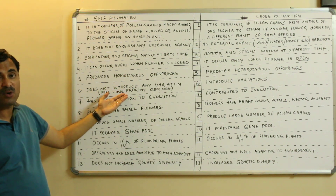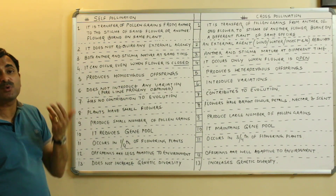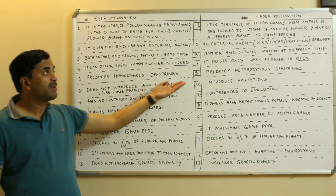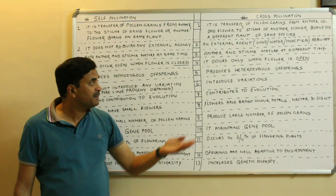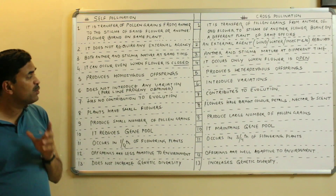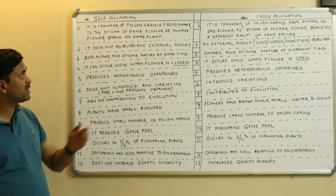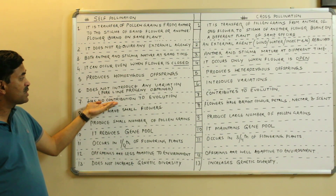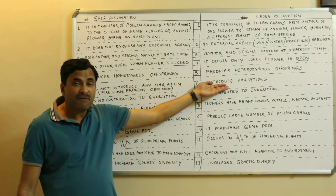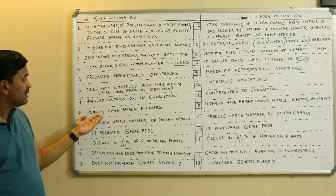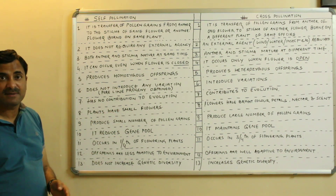Sixth point: self-pollination does not introduce any variations — pure line progenies are obtained, so there are no variations. In contrast, producing variations is the chief feature of cross-pollination. We know that variations play a key role in evolution, so self-pollination does not contribute to evolution, while cross-pollination produces variations and hence contributes to the evolution process.